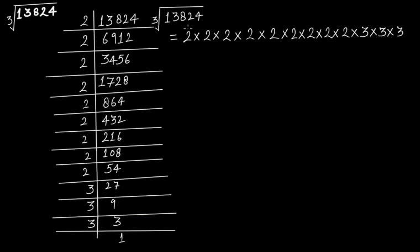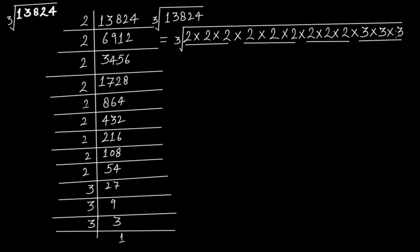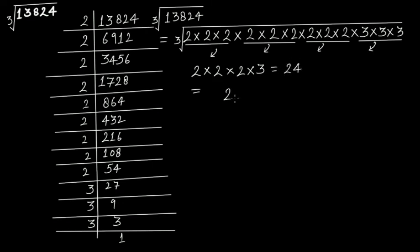So the cube root of 13,824 — take 2 three times, 2 three times, 2 three times, and 3 three times. You get one 2 from here, one 2 from here, one 2 from here, and one 3 from here: 2 × 2 × 2 × 3 = 24. So 24 is the cube root of 13,824.